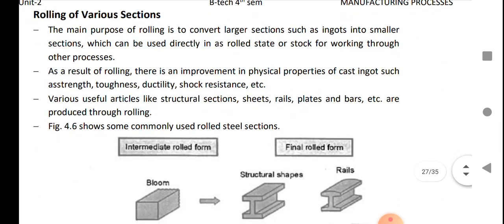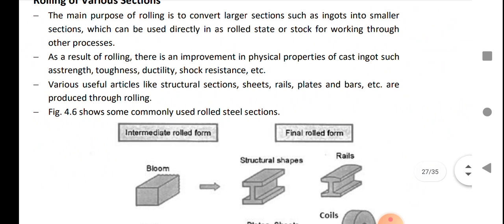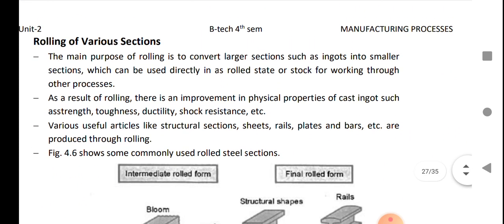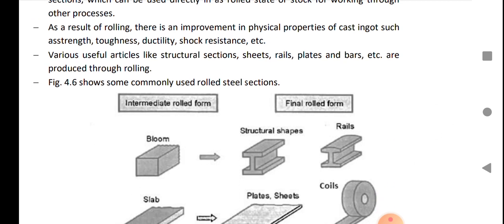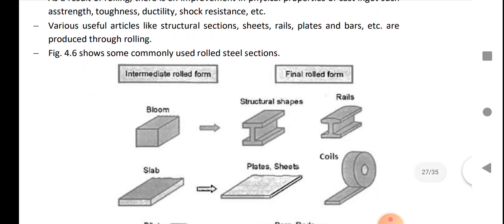Rolling of various sections: The main purpose of rolling is to convert large sections such as ingots into smaller sections which can be used directly in rolled state or as stock for working through other processes. As a result of rolling, there is an improvement in physical properties of cast ingot such as strength, toughness, ductility, shock resistance. Various useful articles like structural sections, sheet, rails, plates, and bars are produced through rolling.